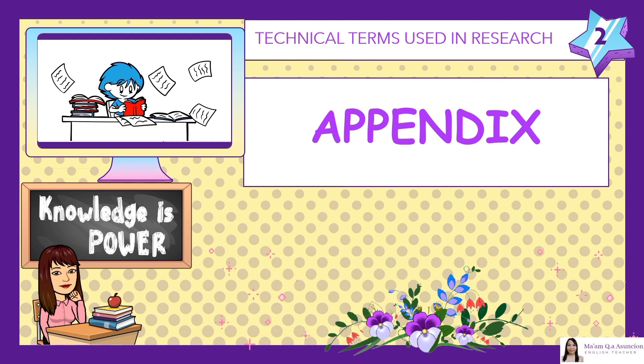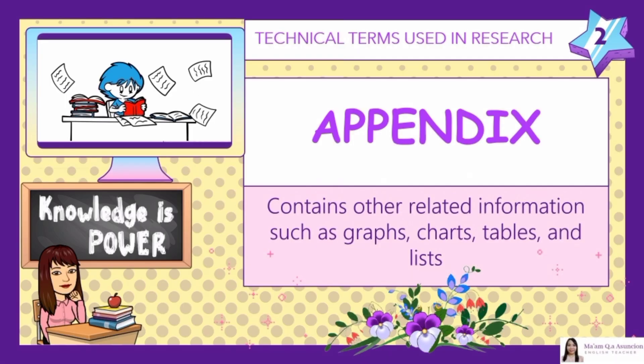Number 2: Appendix. Contains other related information such as graphs, charts, tables, and lists. An appendix contains supplementary material that is not an essential part of the text itself, but which may be helpful in providing a more comprehensive understanding of the research problem, or it is information that is too cumbersome to be included in the body of the paper.